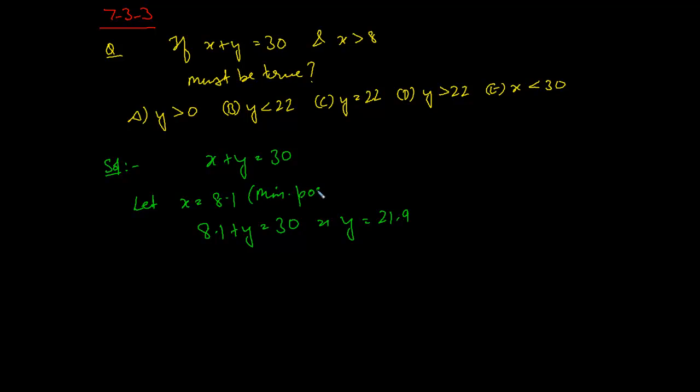Now what we know is that this is the minimum possible value for x, so that tells me that this is the maximum possible value for y. So if y can maximum be equal to 21.9, let's see if we get an answer.